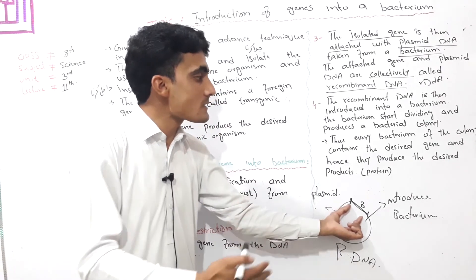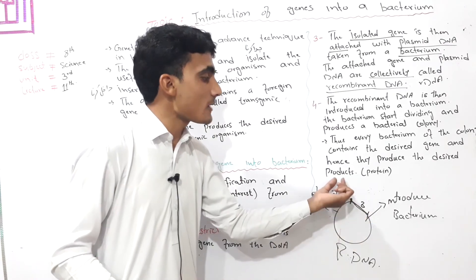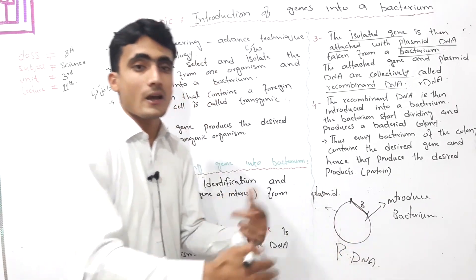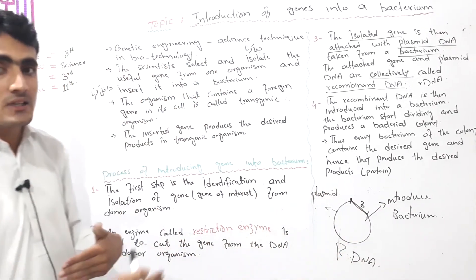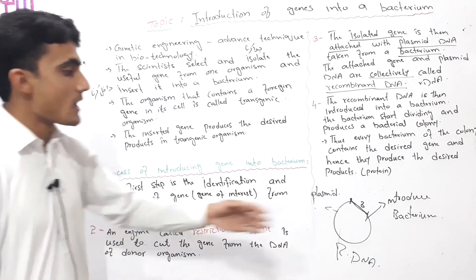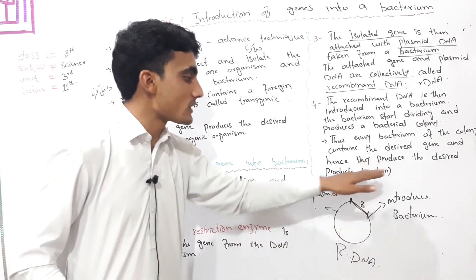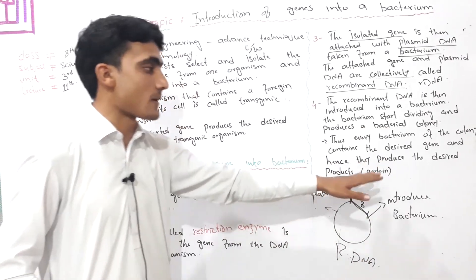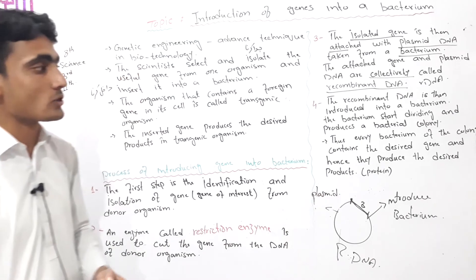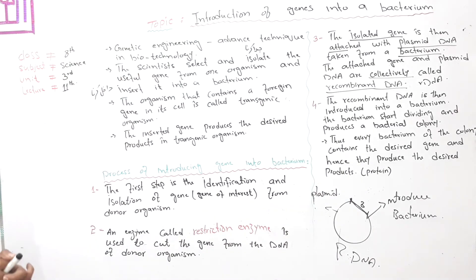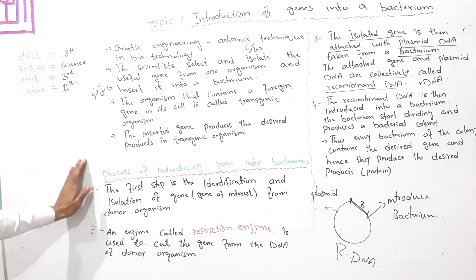The desired products — such as proteins — are produced. The bacterial cells divide and replicate the recombinant DNA, yielding the desired products as a result.